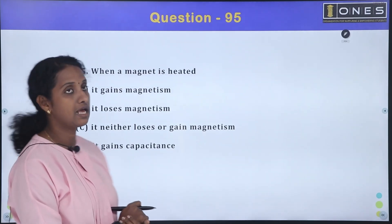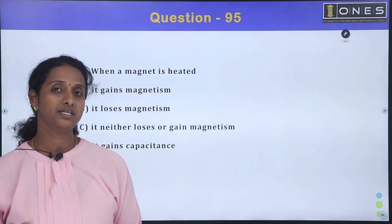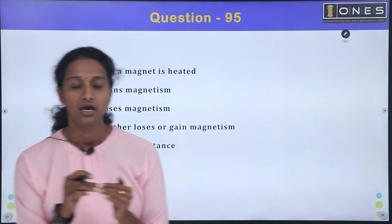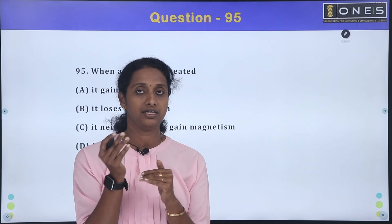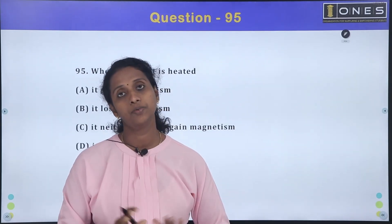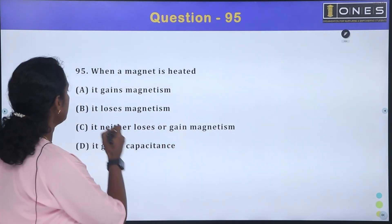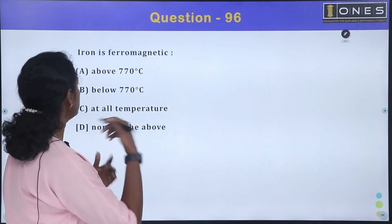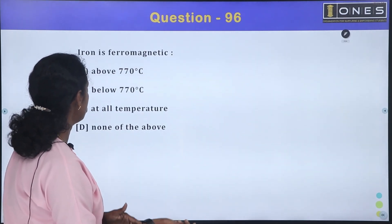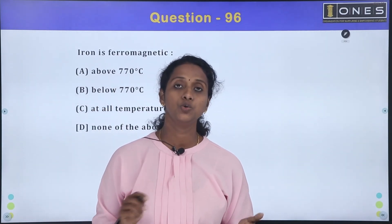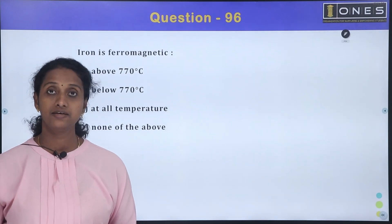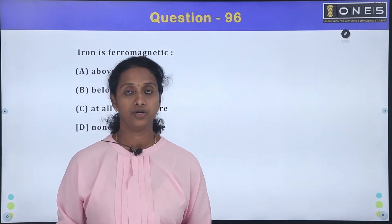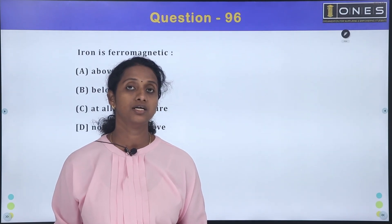When a magnet is heated, what happens? As temperature increases, the magnetic properties weaken. Iron is ferromagnetic below 770 degrees Celsius (the Curie temperature). Above 770 degrees, iron loses its ferromagnetic properties — it loses its magnetism.